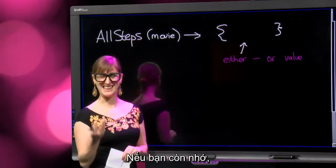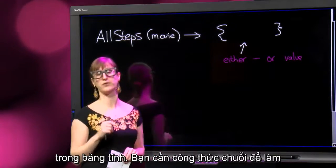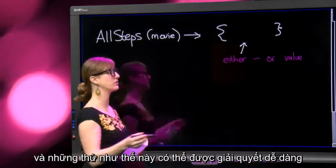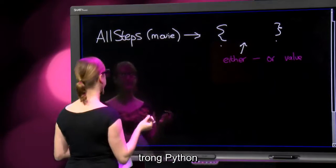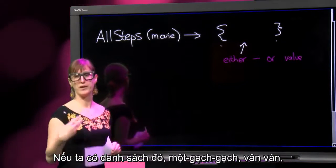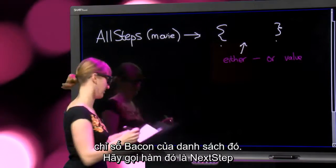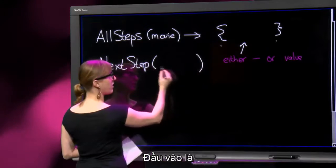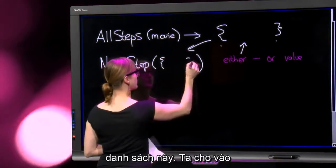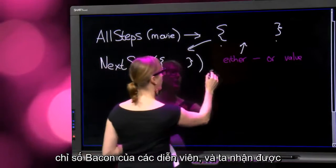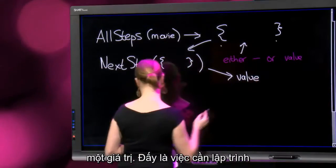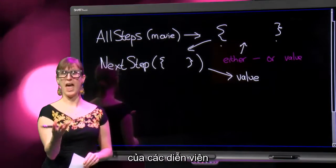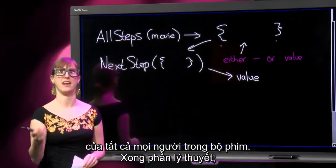If you remember from the previous types, lists are quite hard to work with in spreadsheets — you have to use array formulas for that. But in Python, lists are very easy. They're one of the built-in types and they're very easy to manipulate. Something like this will be easily done in Python. If we have that list — one, dash, dash — what we need to calculate is the Bacon number of that list. So let's call that function next_step. We put in the list of the Bacon numbers of the actors, and what we will get out is a value. So these are the things we're going to program in Python: give me a movie and I will give you a list of Bacon numbers of the actors in it, and give me that list and I will give you the Bacon number of everyone in this movie.